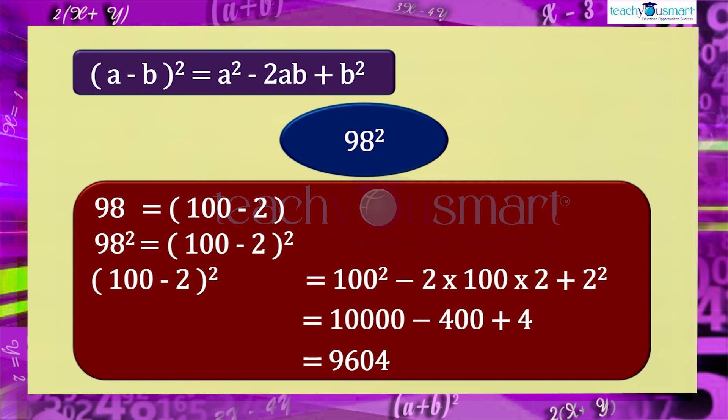We can find the square of a number by using this identity. Before winding up, let us check how much you understood by doing an activity.